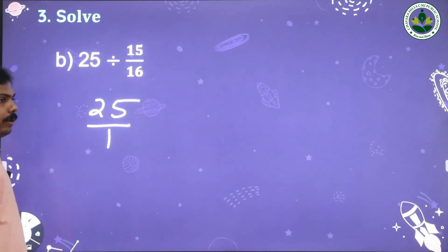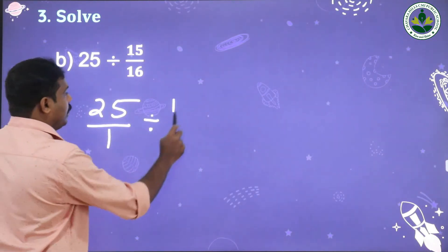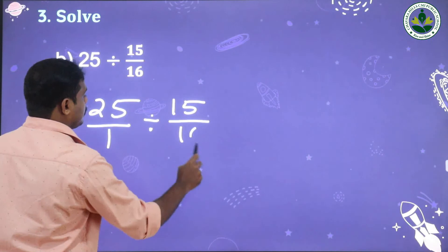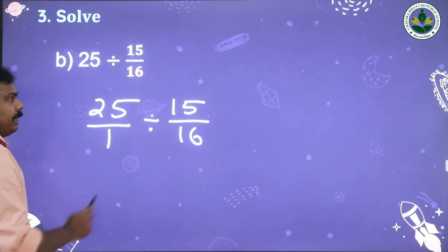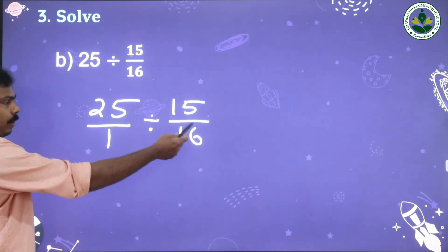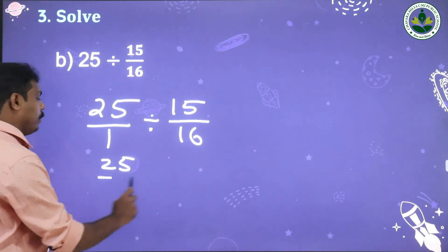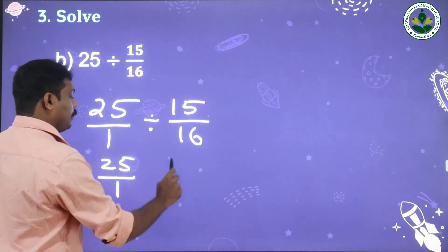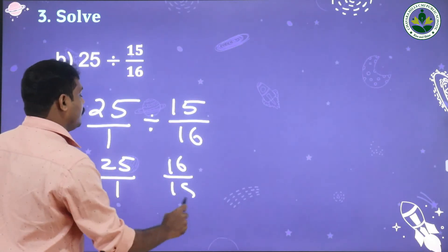First, write the whole number 25 as a fraction: 25/1. Then divide by 15/16. For the division, take the reciprocal of the second number. So we have 25/1 and the reciprocal of the second number is 16/15.